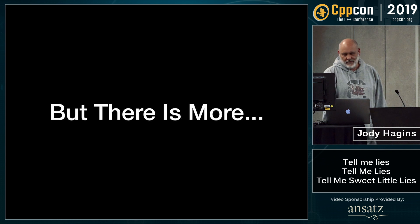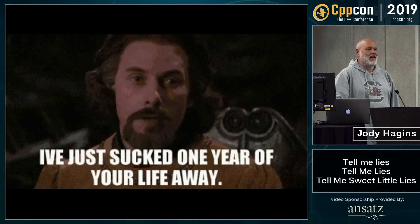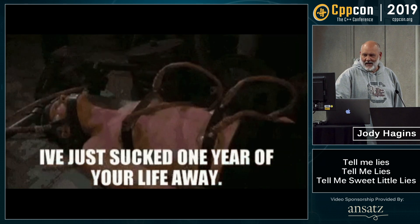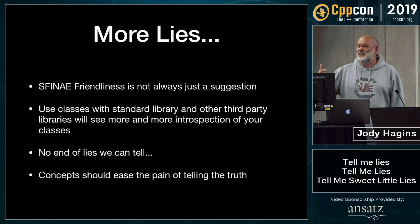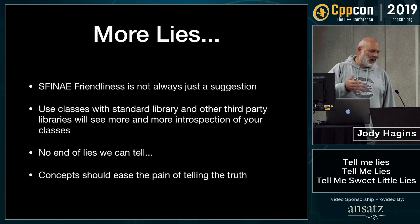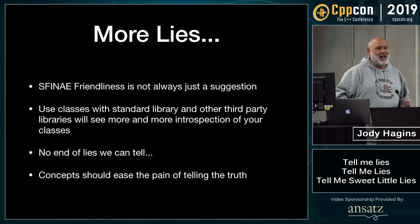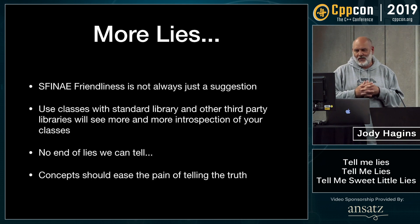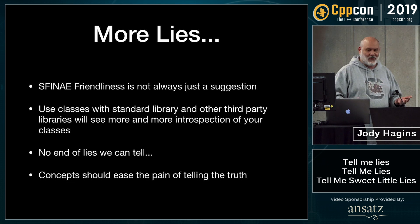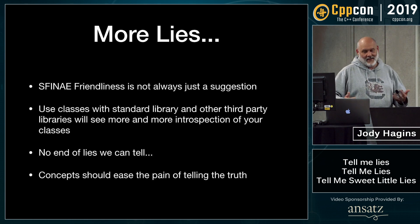But there's more — but I am out of time. There are more lies. Type trait friendliness is not just always a suggestion, because your classes are going to be used from the standard library or third-party libraries, and you don't want to lie to them about your classes. You want to make sure you're telling the truth. And concepts should ease the pain of telling the truth. But it will always be easier to lie than tell the truth in C++. Thank you.